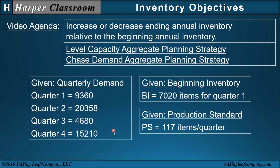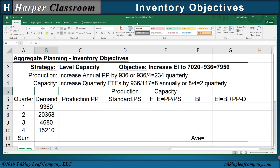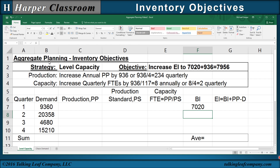We are given the quarterly demand, the beginning inventory of 7,020 for quarter one, and the production standard of 117 items per quarter. In Excel, I've typed in the demand, the beginning inventory of 7,020, and the headings.